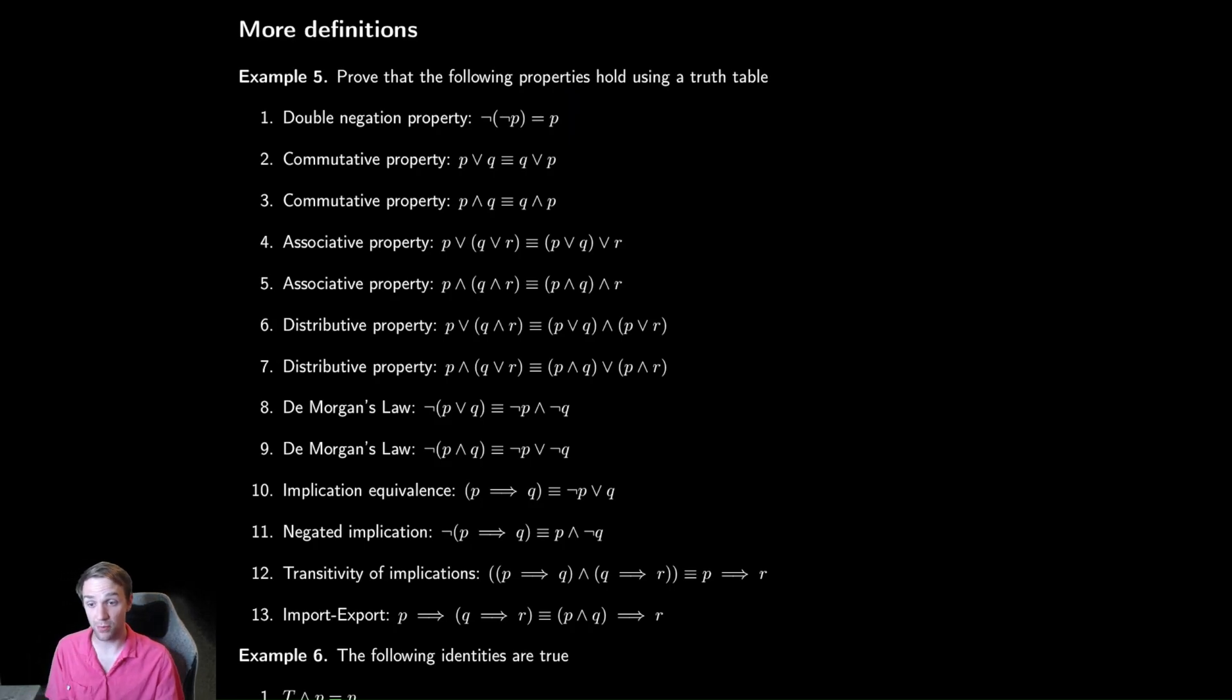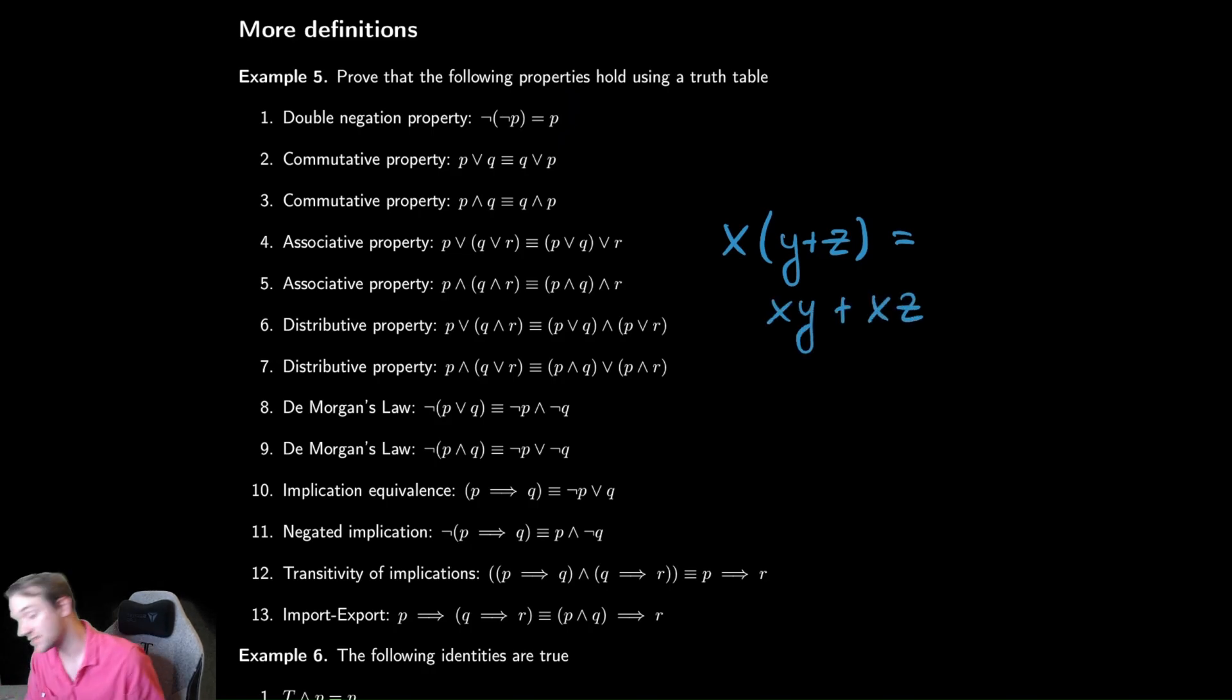Another important one is the distributive property, which works just like you would imagine if you were to write out things with mathematical symbols. So off to the side here, let's write down an example with math. x times y plus z is equal to x times y plus x times z. That is our normal distributive property from multiplication. And if you look at what we are doing, we are taking x times y plus z, and then that becomes x times y plus x times z.